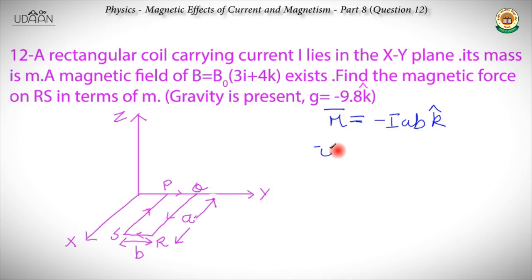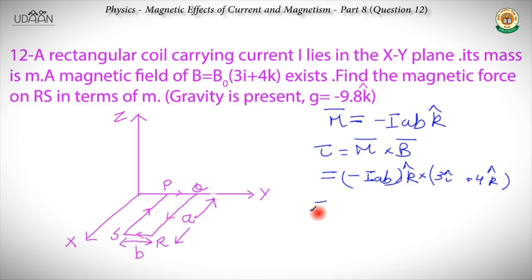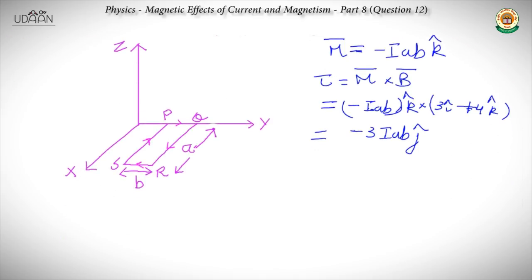We start by finding the magnetic moment vector m = −IABk̂, because the current is in the clockwise direction and by the right-hand rule the thumb points downwards. Then torque = m × B = −IABk̂ × (3î + 4k̂)B₀. Since k̂ × î = ĵ, this gives −3IABĵ, and k̂ × k̂ = 0. So the net magnetic torque is −3IABĵ.